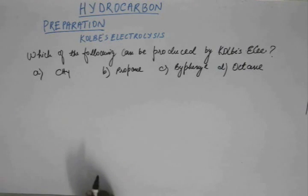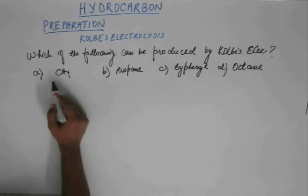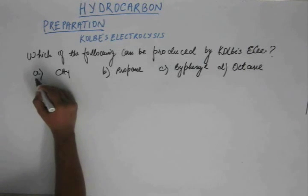Let's check them one by one. Methane obviously can't be produced by Kolbe's electrolysis because our line of thinking would be the product of Kolbe's electrolysis, the organic product, that means the alkane produced as a result of Kolbe's electrolysis is a symmetrical alkane having even number of carbon. So methane is straight away ruled out because methane is having an odd number of carbon.